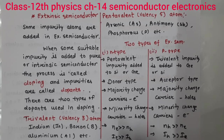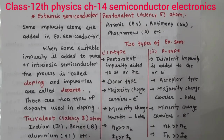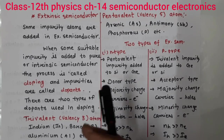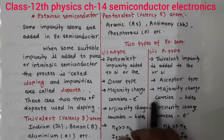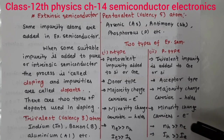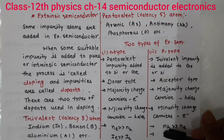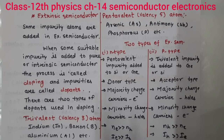P-type semiconductor mein hum trivalent atoms add karte hain silicon aur germanium mein. Trivalent mein kya hota hai ki three atoms add hote hain, aur neighboring four atoms ke saath bond banana hai. Four chahiye, lekin teeen hain, to ek atom aur lena hoga — accept karna hoga, tabhi covalent bond banega. So this is the type of acceptor — p-type semiconductor. Yahan majority charge carriers holes honge aur minority mein electrons honge. Number of holes is greater than number of electrons. So current bhi number of holes ke through greater hogi, more hogi as compared to the electron current. This is the p-type extrinsic semiconductor.